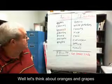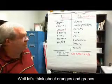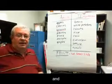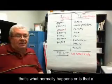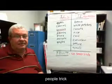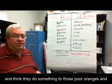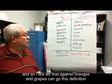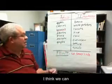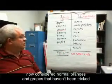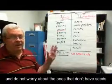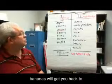Let's think about oranges and grapes. Obviously, oranges and grapes usually have seeds. And when they don't, what do you assume — is that the way it normally happens, or is that maybe a people trick? I think they do something to those poor oranges and grapes. So we won't count that against oranges and grapes. If we go with this definition, we can consider normal oranges and grapes that haven't been tricked, and not worry about the ones that don't have seeds. Bananas we'll get back to in a minute.